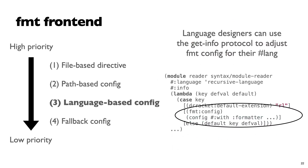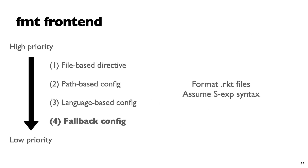There's also a language-based configuration — not configurable by users, but by language designers. In Racket, there's a get-info protocol that allows attaching arbitrary information to a language. Language designers can provide a default formatter configuration for a particular #lang. And lastly, there's a fallback configuration which right now says to format all .rkt files as standard Racket. The idea is to provide good defaults but also allow you to override them appropriately.